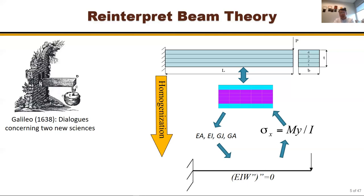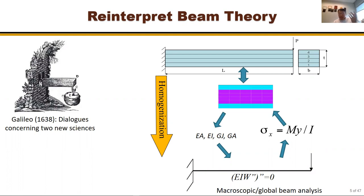In more advanced research terminology, going from a 3D body to a 1D body is called homogenization — you homogenize the cross-section into a material point — or dimensional reduction. The 1D model and beam analysis can be called global or macroscopic analysis. When you calculate σ_x, that's de-homogenization: you use bending moment from the global analysis to recover the 3D local stress field.